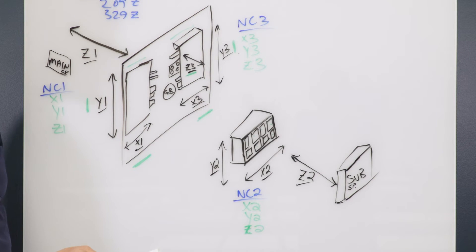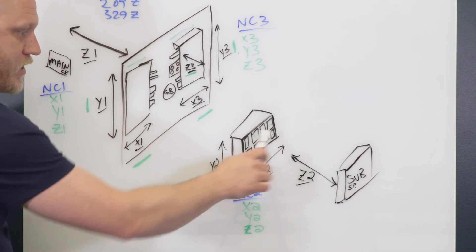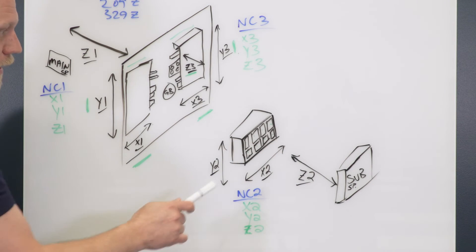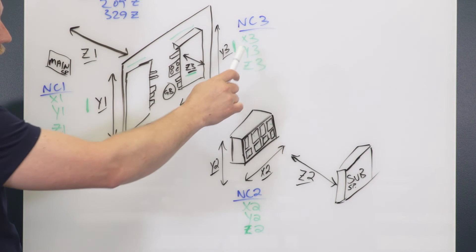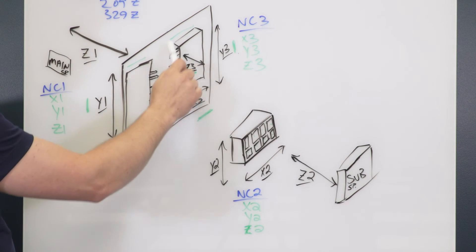Just like the two-path control, this is not going to change whatsoever, looks exactly the same. NC3 is what we're adding on top of this now. That's going to be X3, Y3, and Z3.